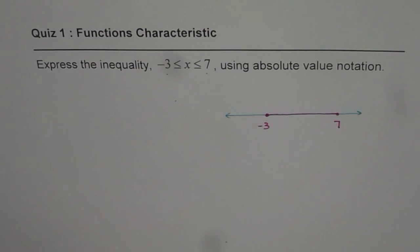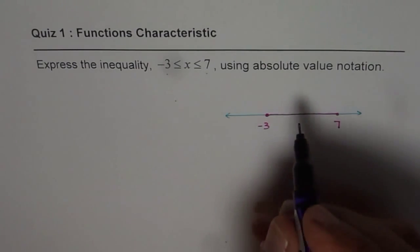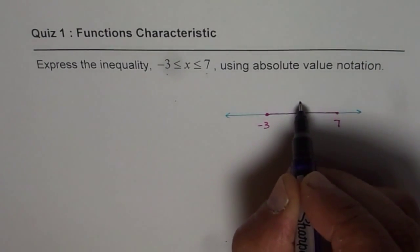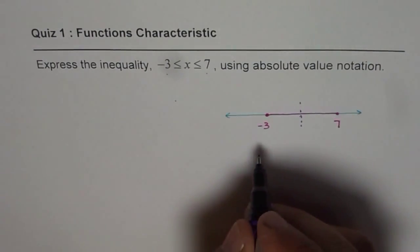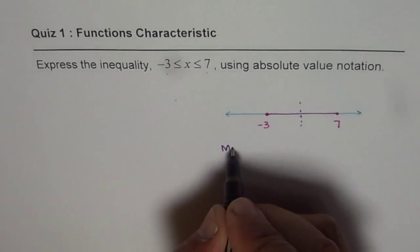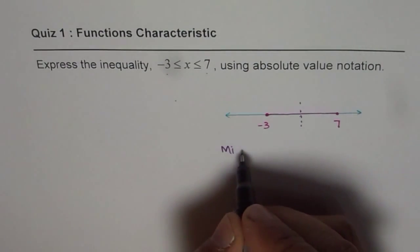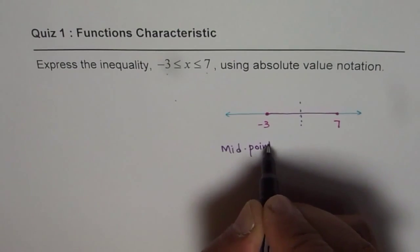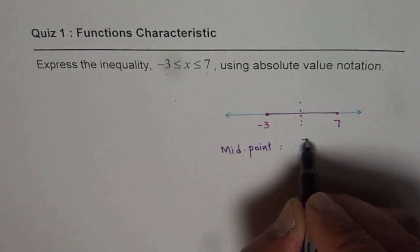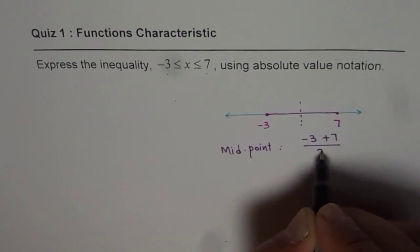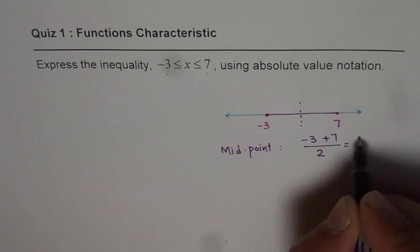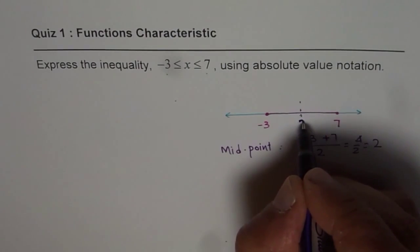The best way to do it is to find the midpoint of these two. We can find the midpoint by adding and dividing by 2. So we get the midpoint as (-3 + 7) / 2, which is 4 / 2 equals 2. So the midpoint is at 2.